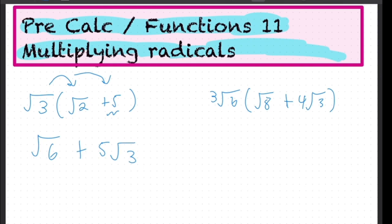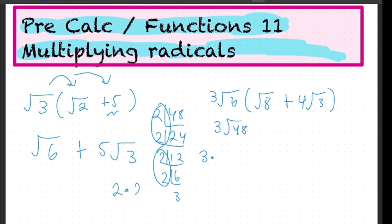Try the next one. So in this one, we will get 3 root 48. And we know that 48 from before can be divided and simplified. And we are looking for groups of 2.